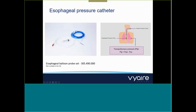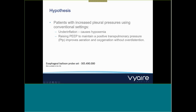The esophageal balloon probe set provides you with complete accessories for esophageal pressure monitoring — though this one is not currently available in the US. The hypothesis is that patients with increased pleural pressures on conventional settings: if we don't give them enough pressure, we'll cause underinflation and resultant hypoxemia. In these patients, we'd need to raise PEEP to maintain positive transpulmonary pressure, improving aeration and oxygenation without overdistension and preventing atelectrauma.